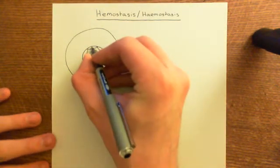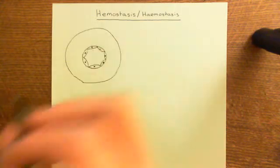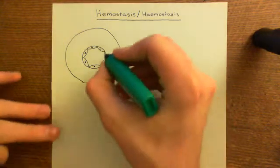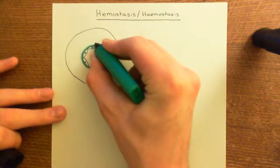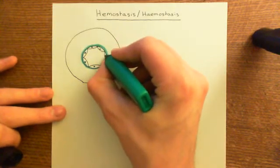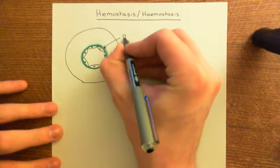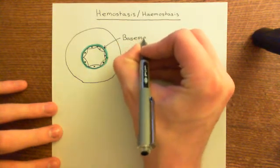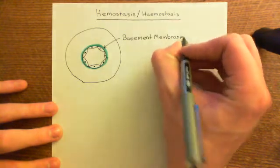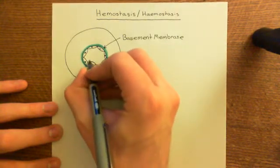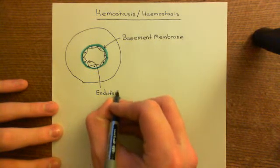The endothelial cells will have nuclei. They are sitting on a basement membrane of collagen, shown here in turquoise, which surrounds the base of all the endothelial cells. The basement membrane is made up of a huge number of different proteins, but one of its main constituents is collagen. The cells sitting on the basement membrane - these are the endothelial cells.